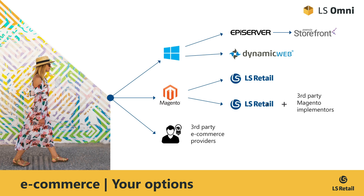As we have seen, there are quite a few options when it comes to selecting the ideal e-commerce platform. On the Microsoft technology stack, we have Avencia Storefront and Dynamic Web. On the Magento platform, we have our own LS Nav extension into Magento, plus the ability to engage third-party Magento implementers to further build on our work. And last but not least, if none of these options apply, any e-commerce vendor out there can integrate with LS Retail. From the e-commerce perspective, we are ensuring total flexibility.